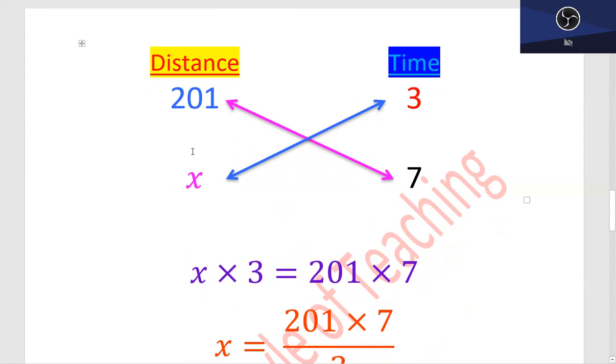When both quantities increase or decrease together, showing the same tendency, it is direct variation.